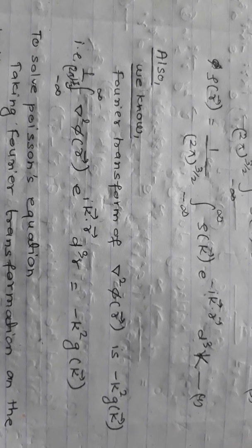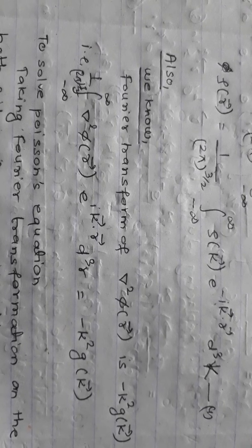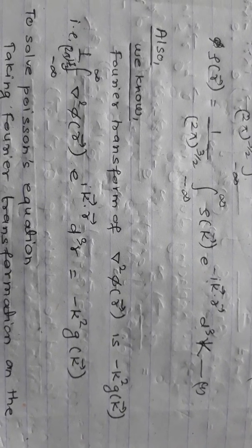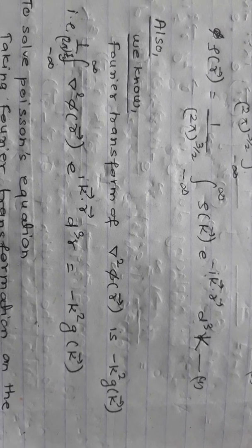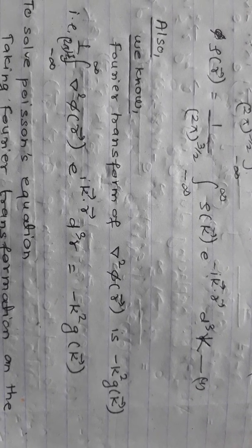While solving this, you need to know the Fourier transform of the Laplacian. The Laplacian is del squared phi(r), and its Fourier transform equals 1 over (2 pi)^(3/2) times the integral, which gives minus k squared times G(k). This result will be used in further calculations.